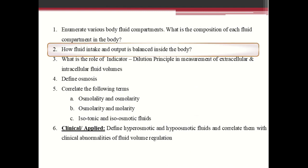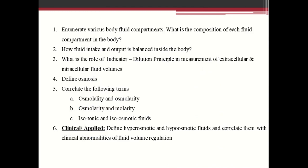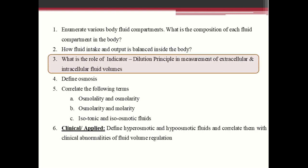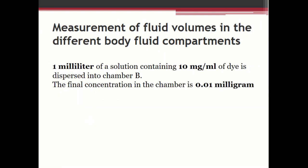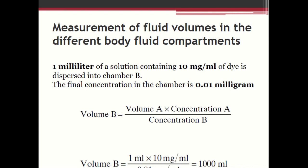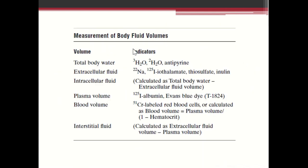The second objective discussed was how fluid intake and output is balanced inside the body. After that, we discussed the role of the indicator dilution principle in measurement of extracellular and intracellular fluid volumes. We saw the role of the principle of conservation of mass and how it can be used to measure fluid volumes in different body fluid compartments, along with the various indicators that can be used.